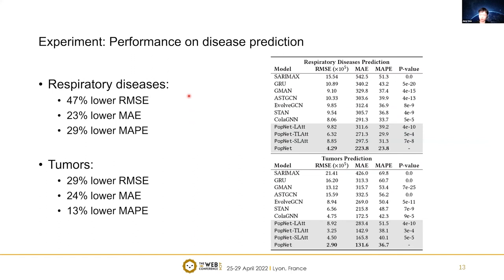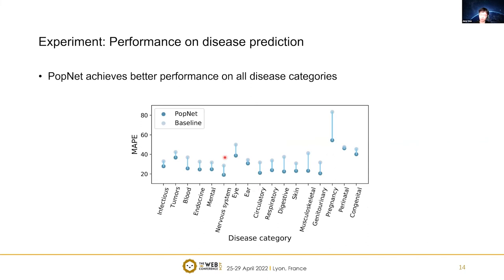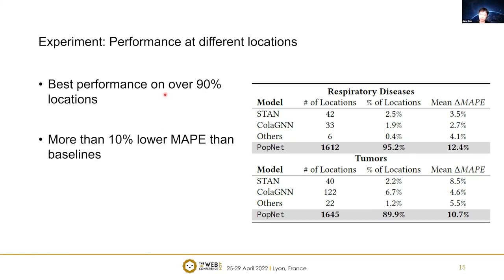PopNet achieves more than 40% lower RMSE on respiratory disease and more than 20% lower RMSE on tumor disease. We also report results across all 17 diseases, and PopNet achieves better performance on all disease categories compared to the best baseline model. We also evaluate PopNet performance at different locations, achieving the best performance on over 19% of locations, with more than 10% lower MAP than the best baselines on those locations.